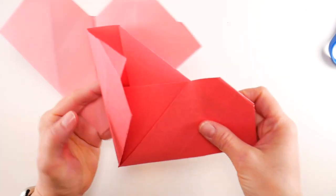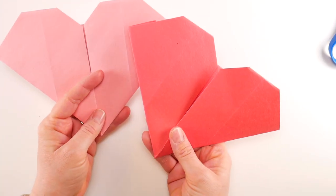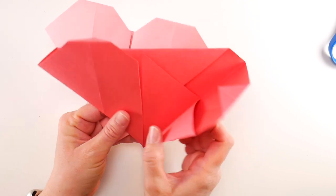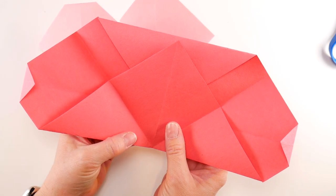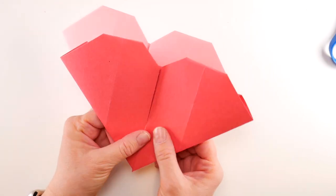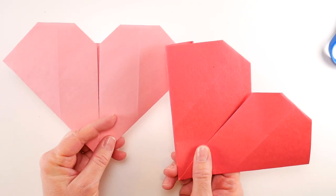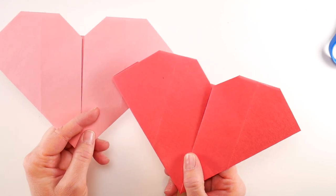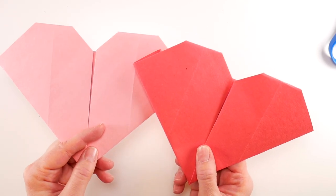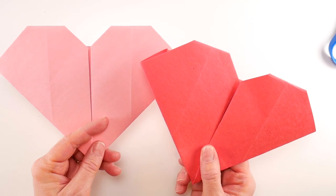You can make these in all different colors and you can even write a message on the inside, so when the person opens the heart they can see your message. That is how you make a super easy origami heart. Thanks so much for watching and be sure and hit the subscribe button to get all of our latest sparkle and splatter video updates. Thanks again everyone.